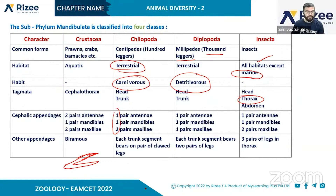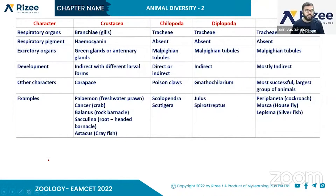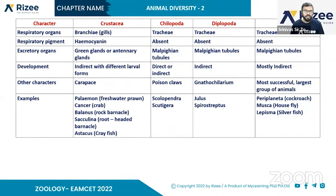Regarding respiratory organs: in Crustacea, the most important respiratory organ is the branchia (gills). In Chilopoda, tracheae are present. Diplopoda and insects also have tracheae. These differences help you identify and compare the classes.